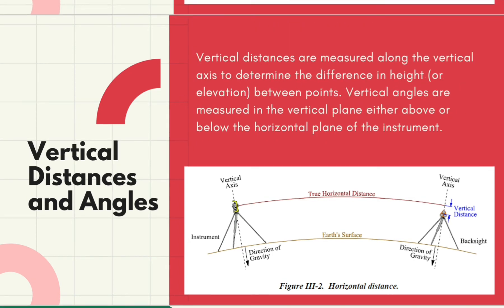Vertical distances are measured along the vertical axis to determine the difference in height or elevation between points. Vertical angles are measured in the vertical plane either above or below the horizontal plane of the instrument. Zenith angles used as reference for measuring vertical angles are defined as zero degrees directly overhead and 90 degrees at the horizontal plane.